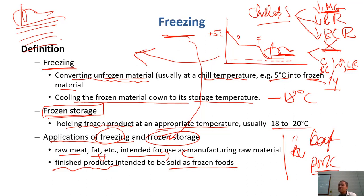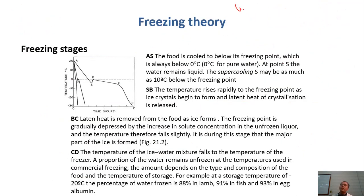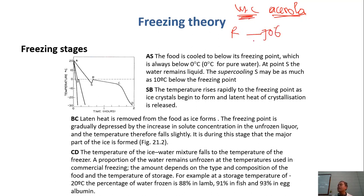For example, vitamin C in acerola — a Vietnamese cherry — which is the king of vitamin C. When stored at room temperature, after three days you lose 70% of vitamin C. Under chilling conditions, after one week you lose about 30%. But under frozen conditions, after one year you lose maybe only 20%. So frozen storage is the best way to preserve vitamin C.